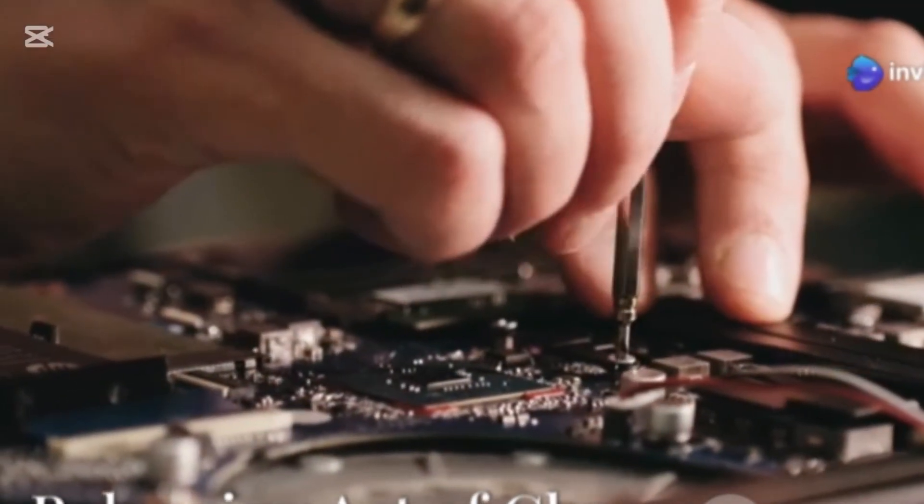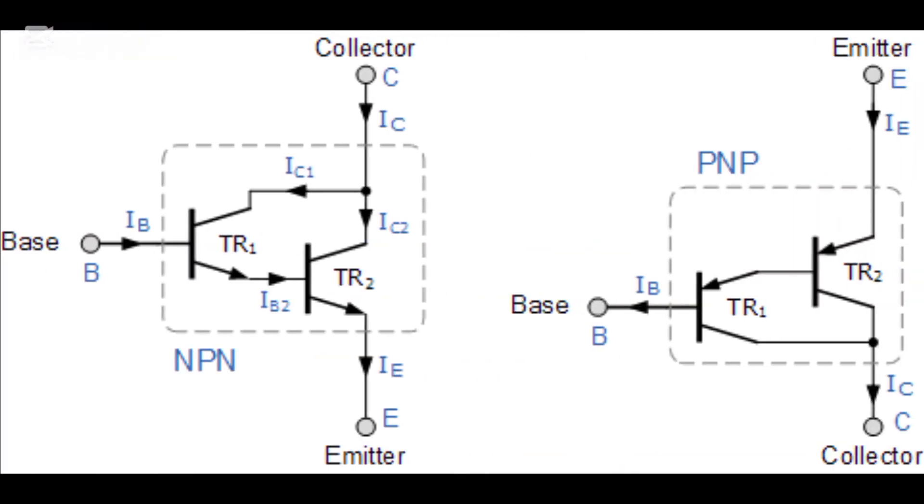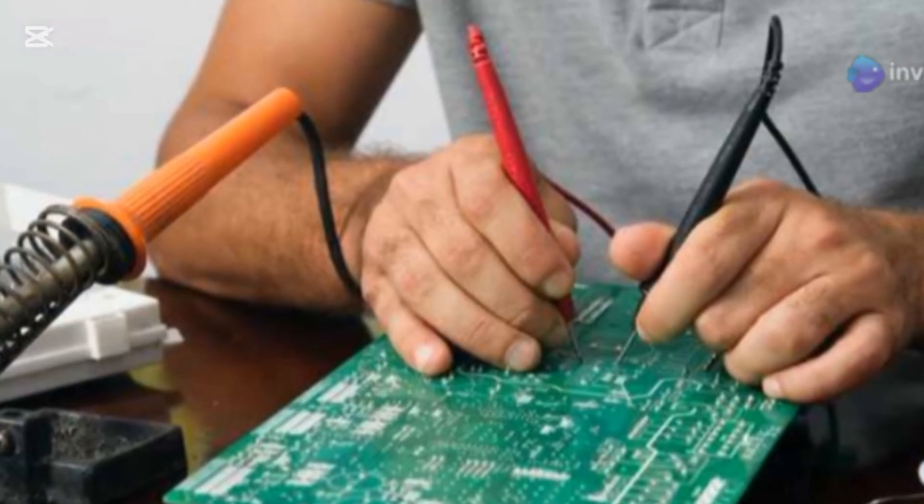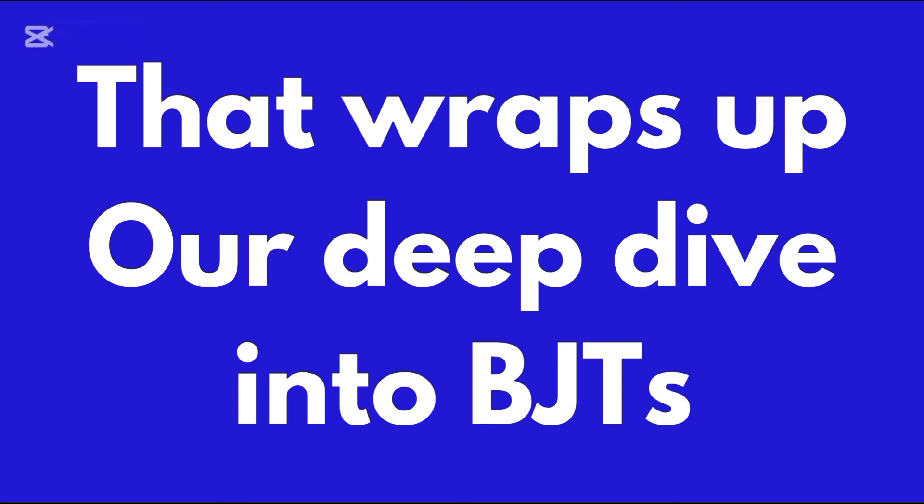For those interested in more advanced topics, BJTs can form Darlington pairs for higher gain, and you must be careful of thermal runaway, especially in high power designs.